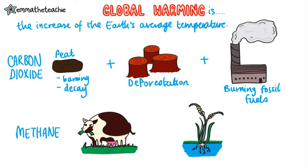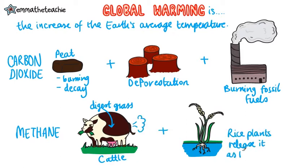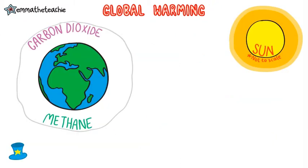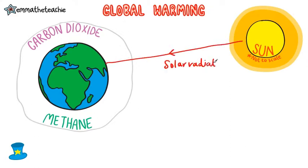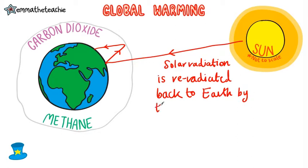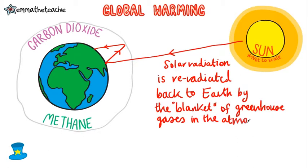Methane is also on the rise. Cattle release methane as they digest grass, and rice fields release it as they grow. Both carbon dioxide and methane cause global warming by creating a greenhouse effect. This is when solar radiation from the sun is prevented from escaping our atmosphere by the blanket of greenhouse gases. Instead, it gets re-radiated back to the Earth, increasing the surface temperature.